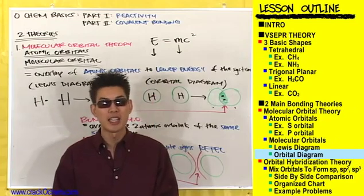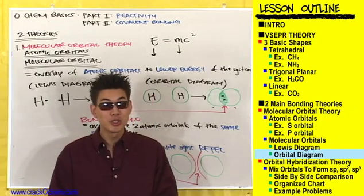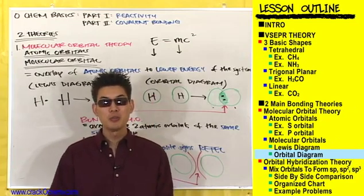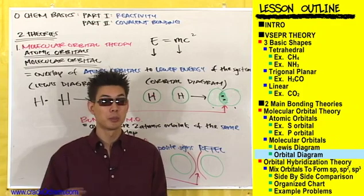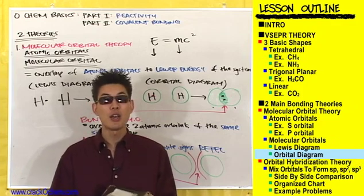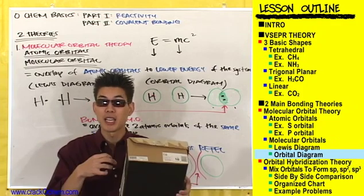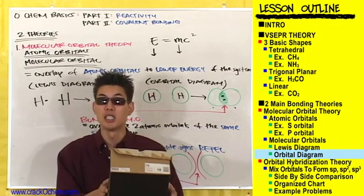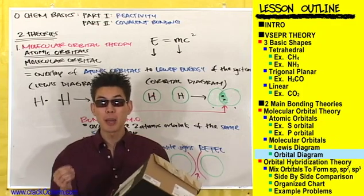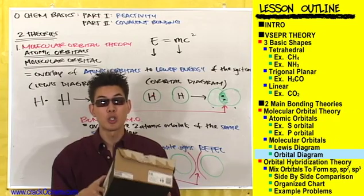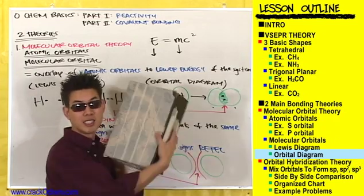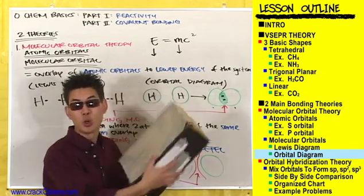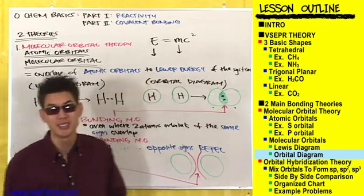Lower the mass, lower the energy. E equals mc squared. And hopefully that gave you a little more of a visual approach to how atoms come together and bond. The overlap of atomic orbitals to share electrons is the molecular orbital.